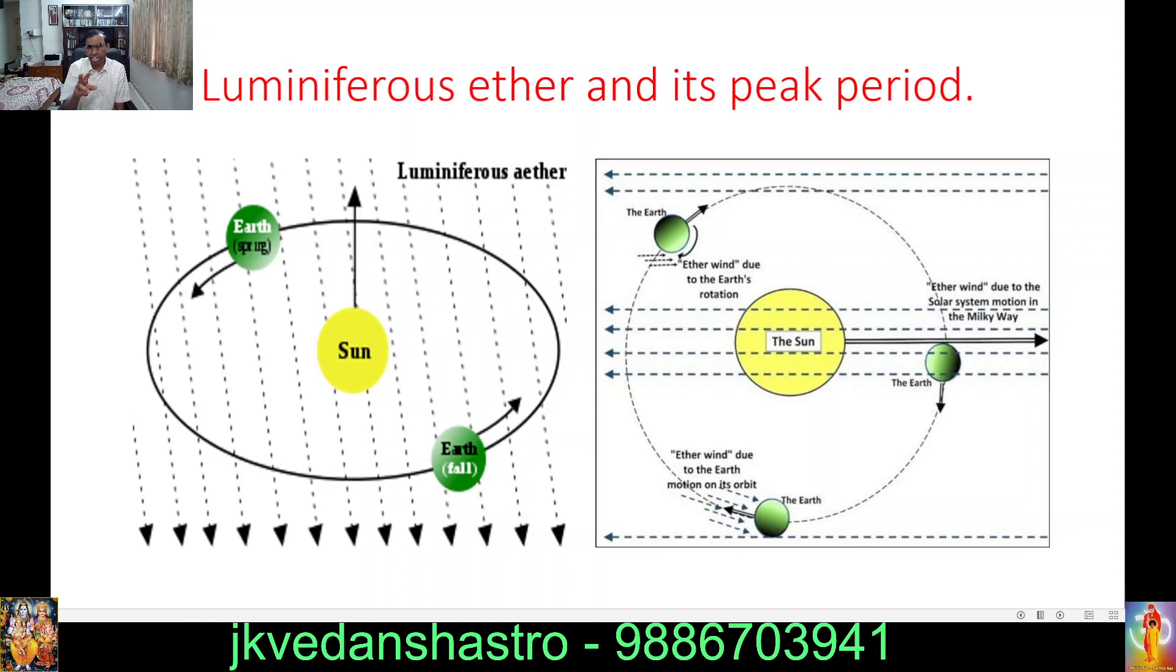See, shivaratri will come every month. That time, ether's force will be there. But the less intensity. See, ether will be two types. One is spring type, another is called fall type. The spring type has got more power. Because this particular type, at a particular time, will move from west to east. At that time, our earth will move from east to west. This will happen on Mahashivaratri day. What a wonderful thing.